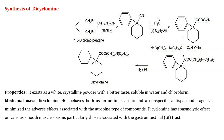Dicyclomine exists as a white crystalline powder with a bitter taste, soluble in water and chloroform. Dicyclomine hydrochloride behaves both as an anti-muscarinic and non-specific antispasmodic agent, minimizing adverse effects associated with atropine-type compounds. Dicyclomine has a spasmolytic effect on various smooth muscle spasms, particularly those associated with the gastrointestinal tract.